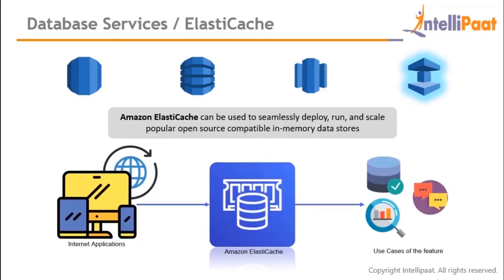Amazon ElastiCache is an auxiliary memory for high-speed data retrieval. It sits between the user-side web applications and the server side. When a user requests information, the system first checks the cache; if available, data is returned immediately without hitting the server. Frequently accessed data is stored automatically in the cache. Amazon ElastiCache also supports dynamic scaling up or down.